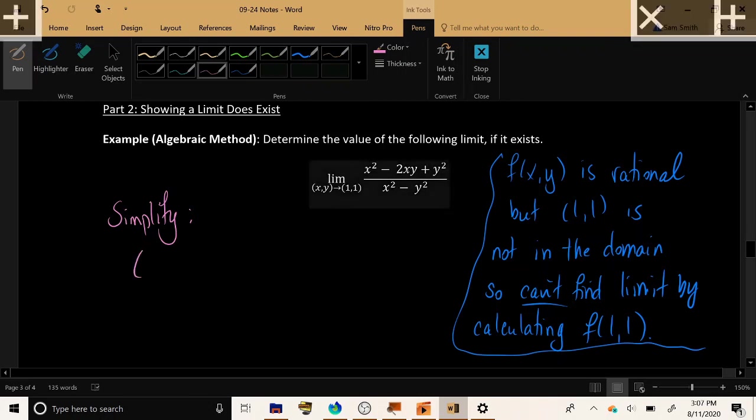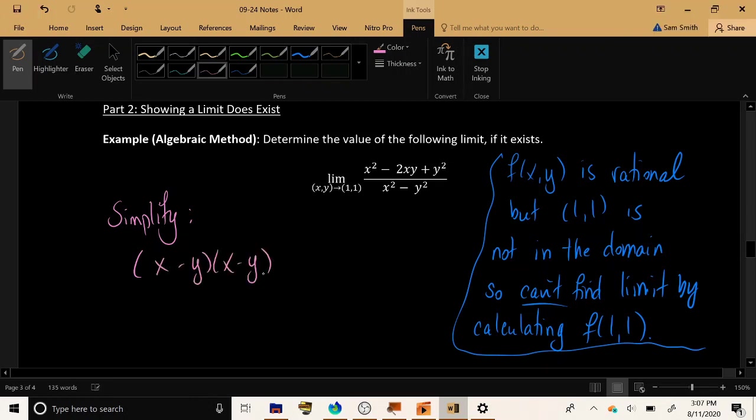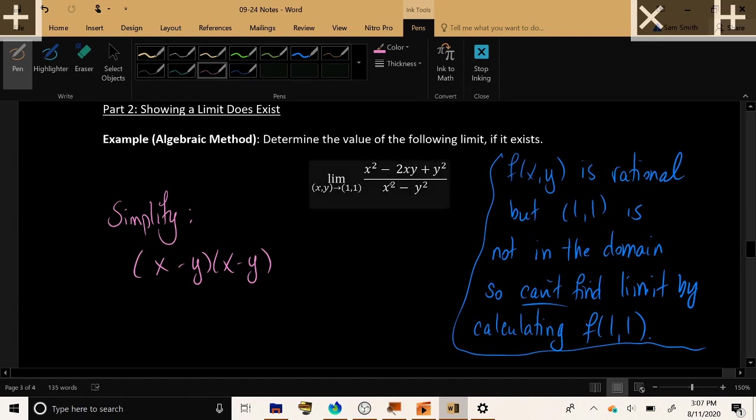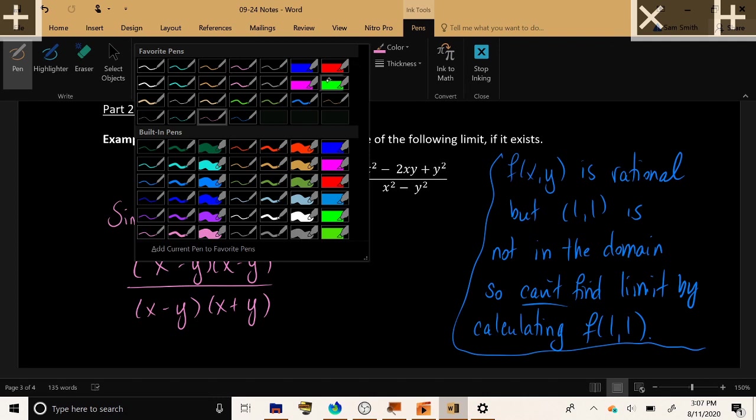And let's go ahead and factor the numerator. Now, x squared minus 2xy plus y squared, that's one of our perfect square trinomials. And this is x minus y, x minus y, and in the denominator, x squared minus y squared, that's the difference of squares, and it can become x minus y times x plus y.